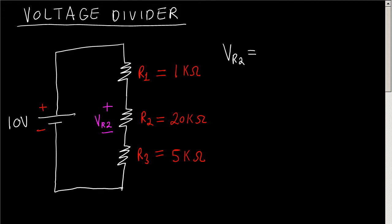...which is 10 volts in this case, times resistor R2 over all the resistances added in series. So the answer will be about 7.69 volts. Now you need to remember that this only works when you have your resistors in series.